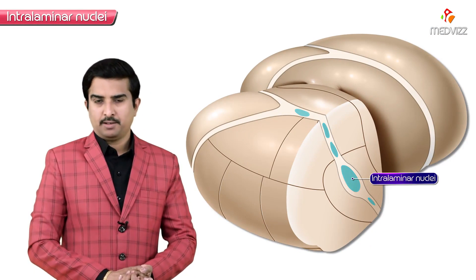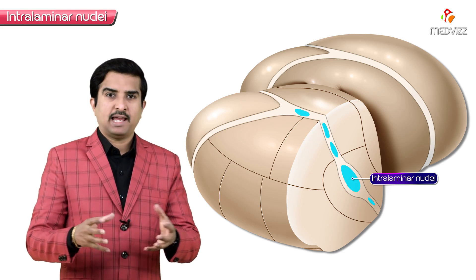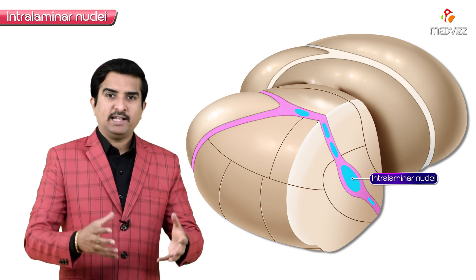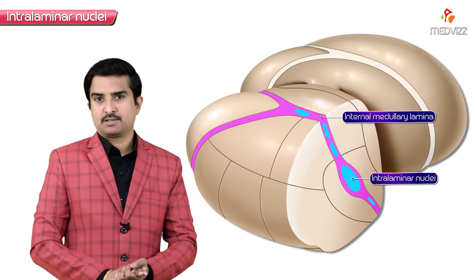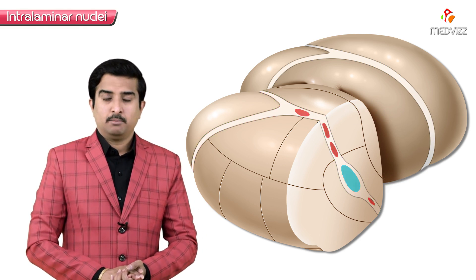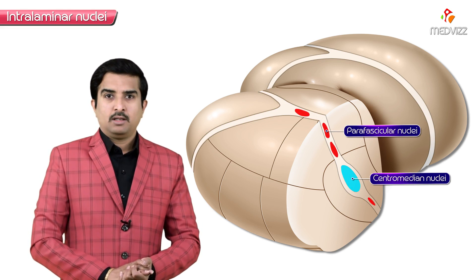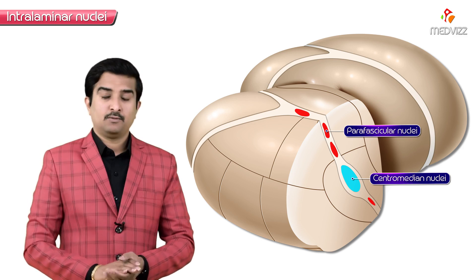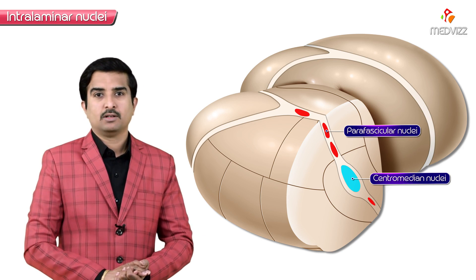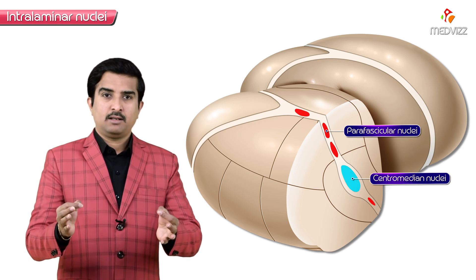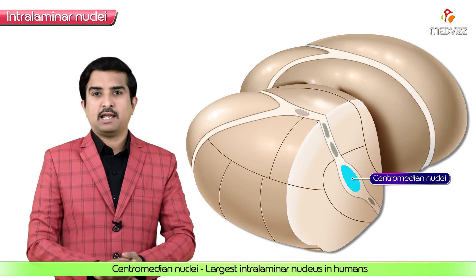Intralaminar nuclei are several small nuclear groups embedded within the white matter of the thalamus, specifically within the internal medullary lamina. We will mainly discuss the centromedian and parafascicular nuclei, as other small nuclei don't have greater anatomical significance. The centromedian nucleus is the largest intralaminar nucleus in humans.